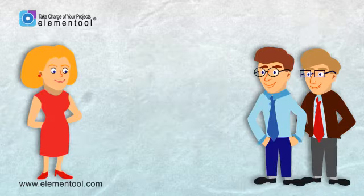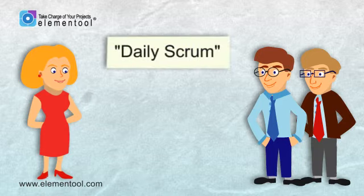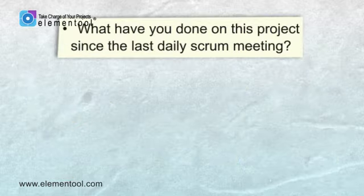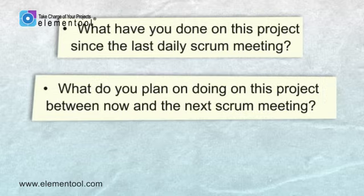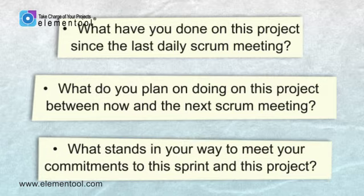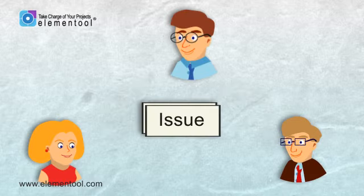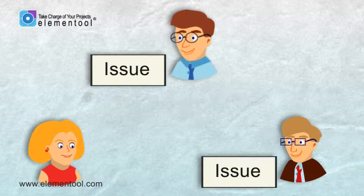Every day, the team meets for a short 15-minute meeting called Daily Scrum. In this meeting, each team member answers three questions: What have you done on this project since the last Daily Scrum meeting? What do you plan on doing on this project between now and the next Scrum meeting? And what stands in your way to meet your commitments to this sprint and this project? The purpose of Daily Scrum is to synchronize the work of all team members and address any issues that might delay the work progress.